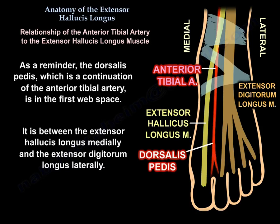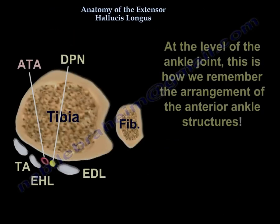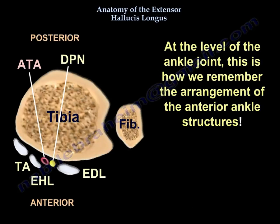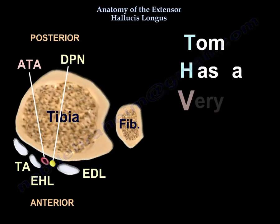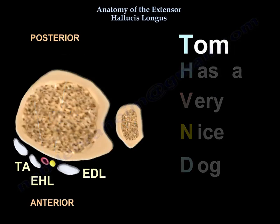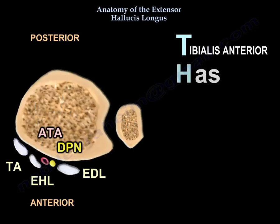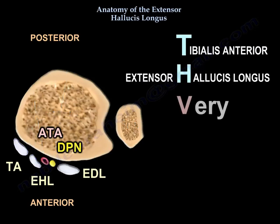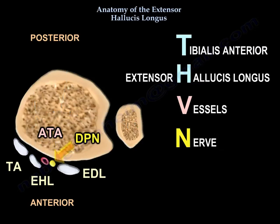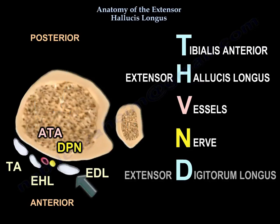As a reminder, the dorsalis pedis, which is the continuation of the anterior tibial artery, is in the first web space, between the extensor hallucis longus medially and the extensor digitorum longus tendon laterally. At the level of the ankle joint, we use the mnemonic 'Tom Has A Very Nice Dog': T for tibialis anterior, H for hallucis, A for artery, V for vessels, N for nerve, and D for digitorum — the extensor digitorum longus.